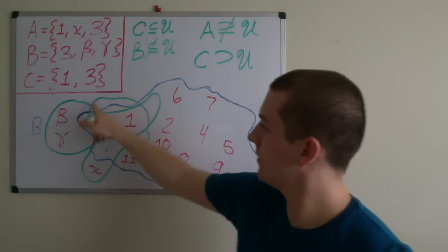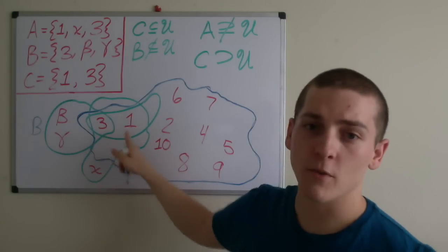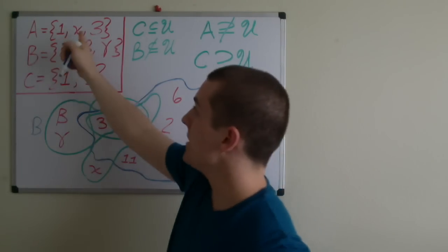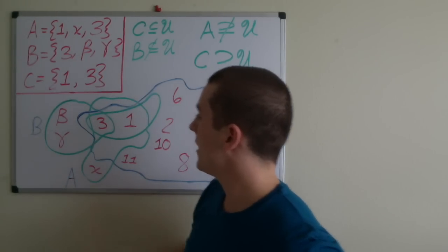Likewise this set here, it contains elements 3, 1, and x. Well A contains 3, 1, and x. So this is the set A.